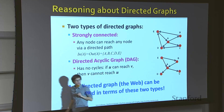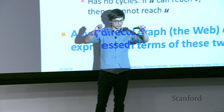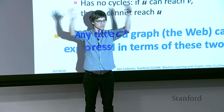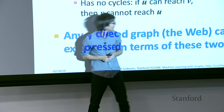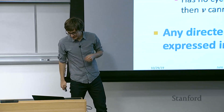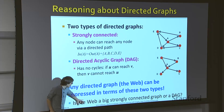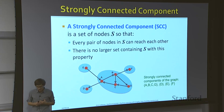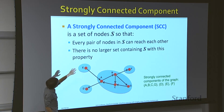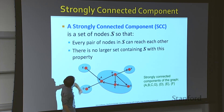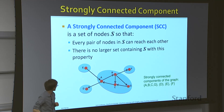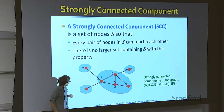You can prove this by contradiction: if you merge two strongly connected components and there are paths both ways, then they weren't the largest SCCs — the entire thing would be one SCC. A strongly connected component is a set of nodes where every pair can reach each other, and there is no larger set containing it. It must be as big as it can be.